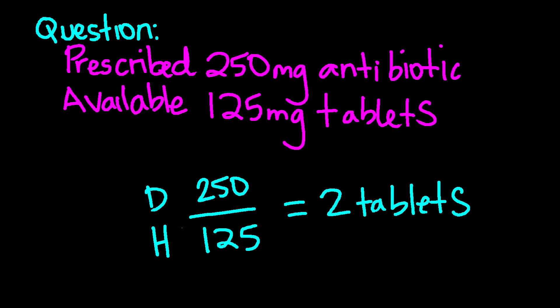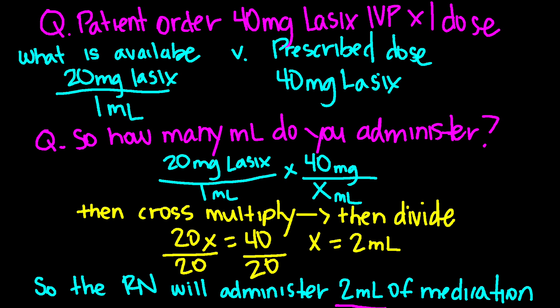You will administer two tablets to your patient. Key tip: ideally you should not give more than three tablets of any one PO medication. If the dose requires more than three tablets, a higher concentrated dose should be administered at the discretion of the ordering provider. Now let's go over IV push injections.